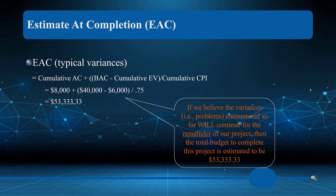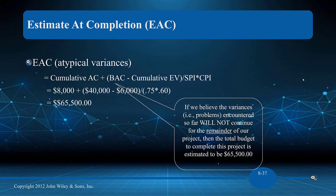Keep in mind this projection may not be realistic — the project may get back on track. The EAC formula uses cumulative actual cost of eight thousand, plus the BAC minus cumulative earned value, divided by the cumulative CPI. This tells us the project is going to end up at approximately fifty-three thousand three hundred and thirty-three dollars — a significant overrun.